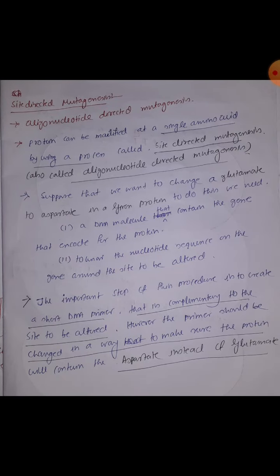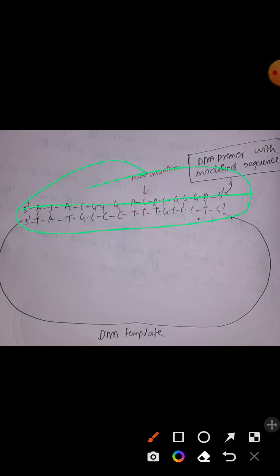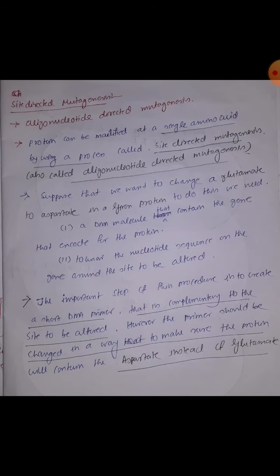Site-directed mutagenesis is also known as oligonucleotide-directed mutagenesis. Oligonucleotide means a composition consisting of around 9 to 10 nucleotides. The primer we use is an oligonucleotide, and this primer directs the mutagenesis — that is why the name oligonucleotide-directed mutagenesis. It is a recombinant DNA technology application used to generate a protein having a mutation in one amino acid.